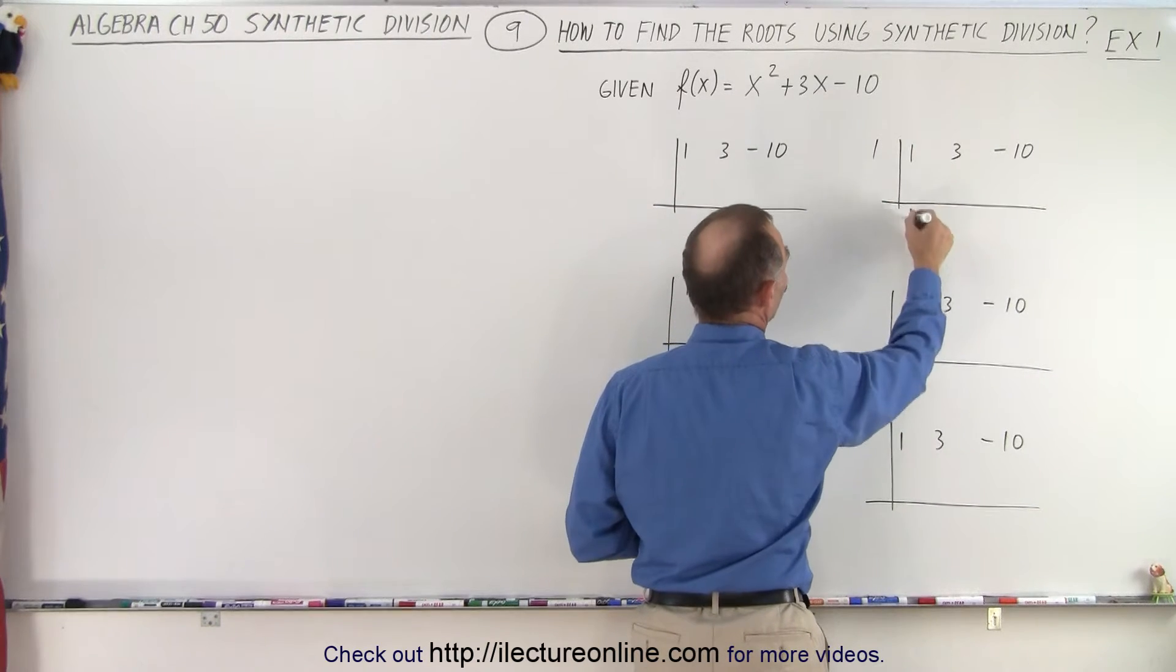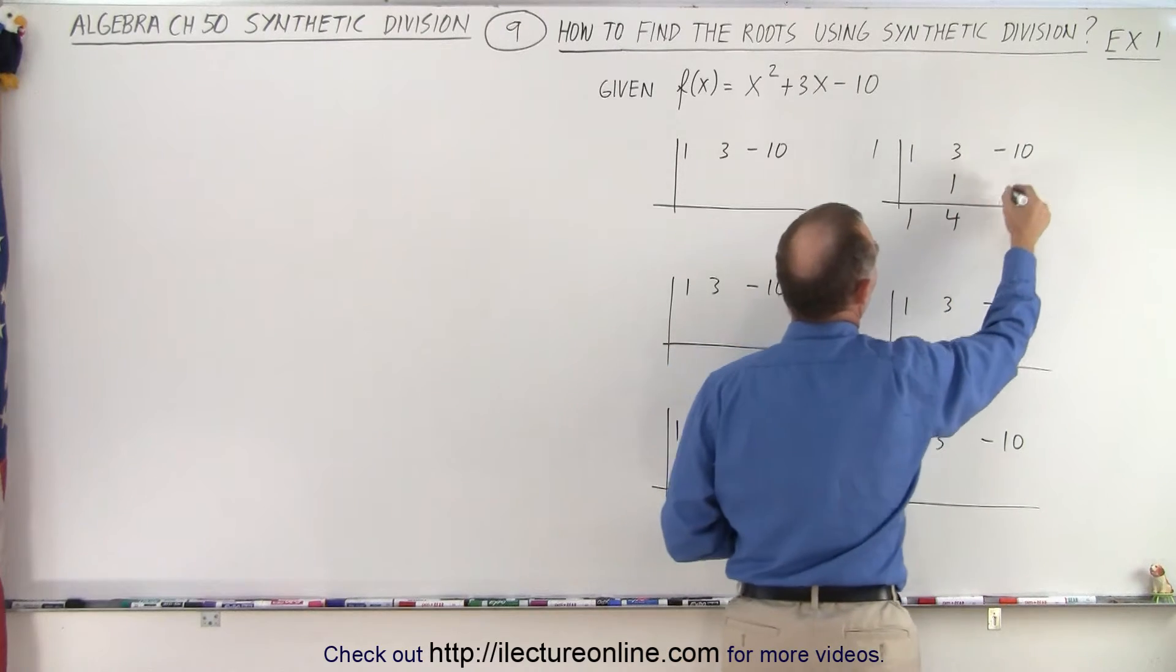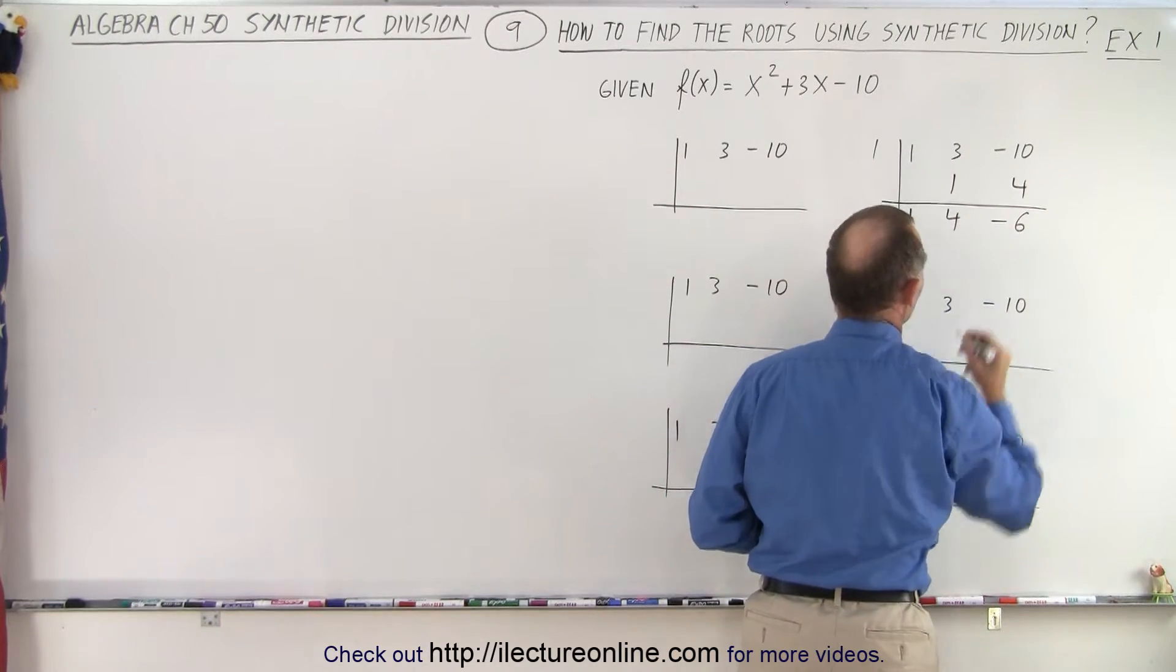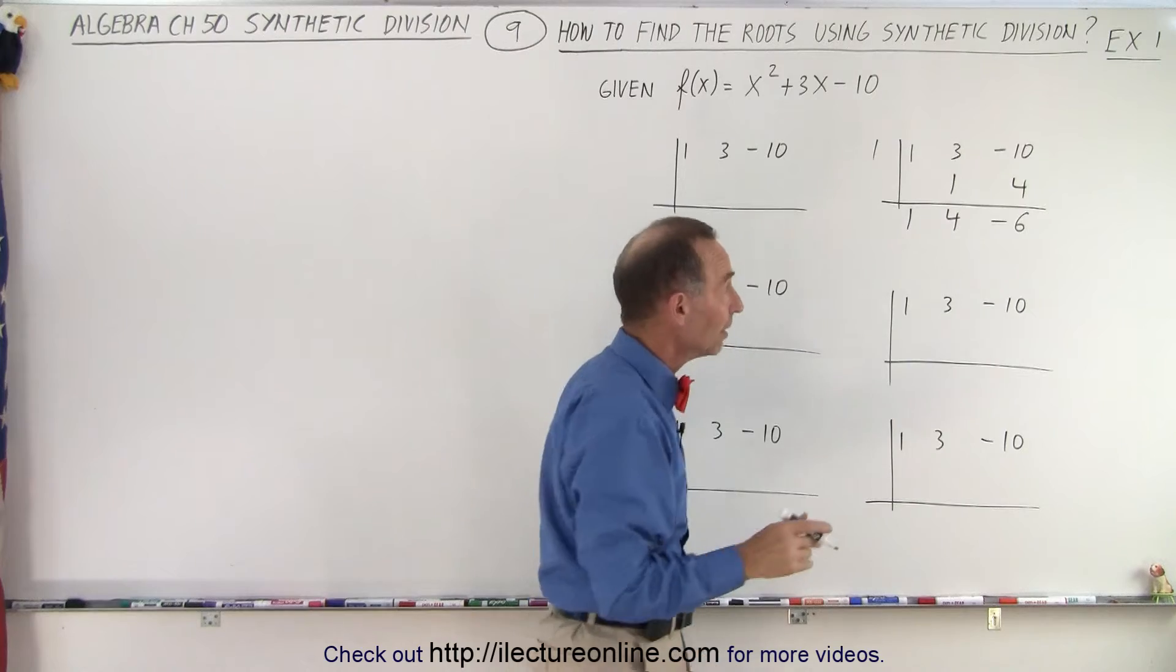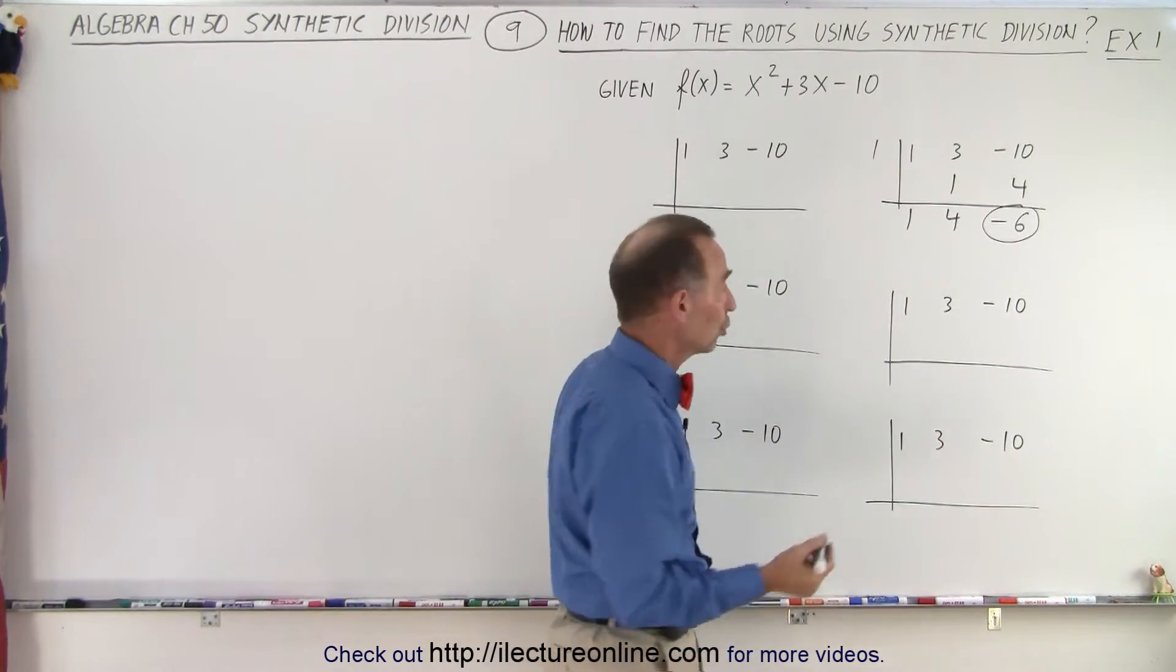I drop down the first number. 1 times 1 is 1. Add them together, I get 4. 1 times 4 is 4. Add them together, I get negative 6. All right, I'm not too far away from 0. I don't know which direction I should go to get 0, so let's try the number 2.